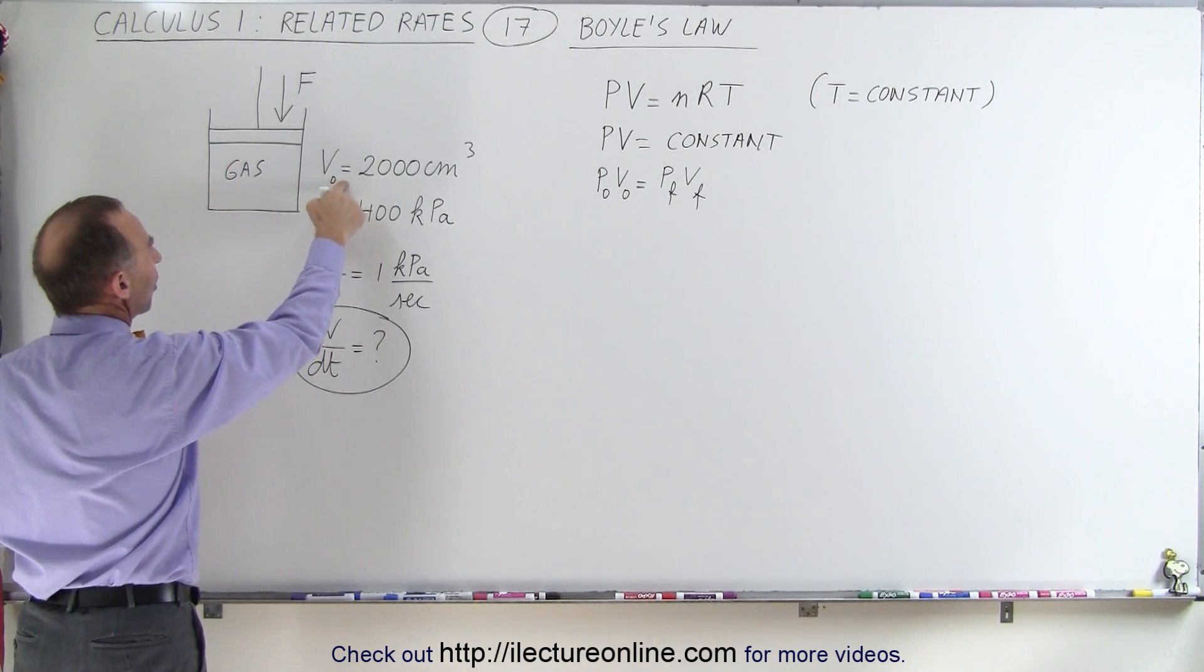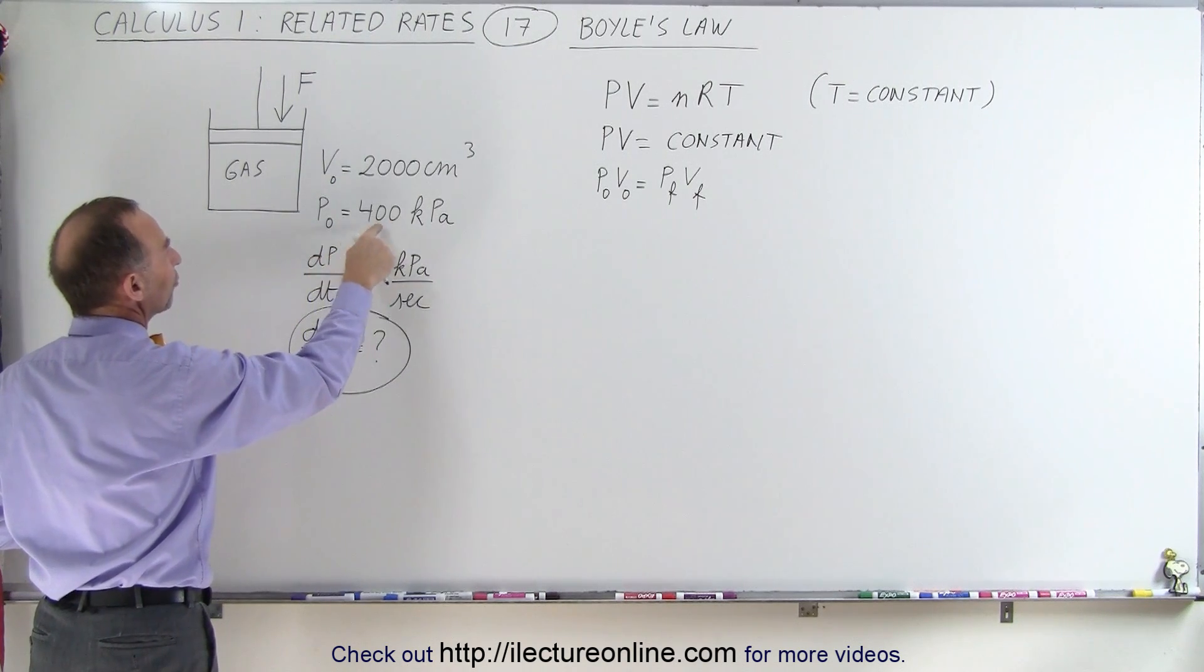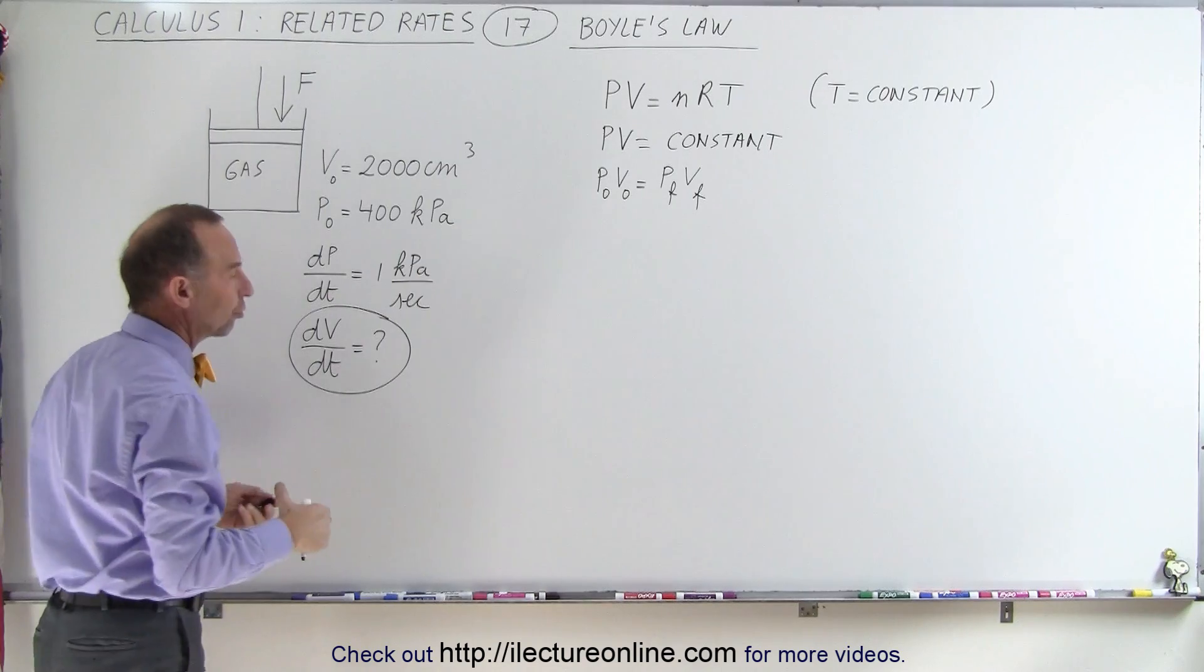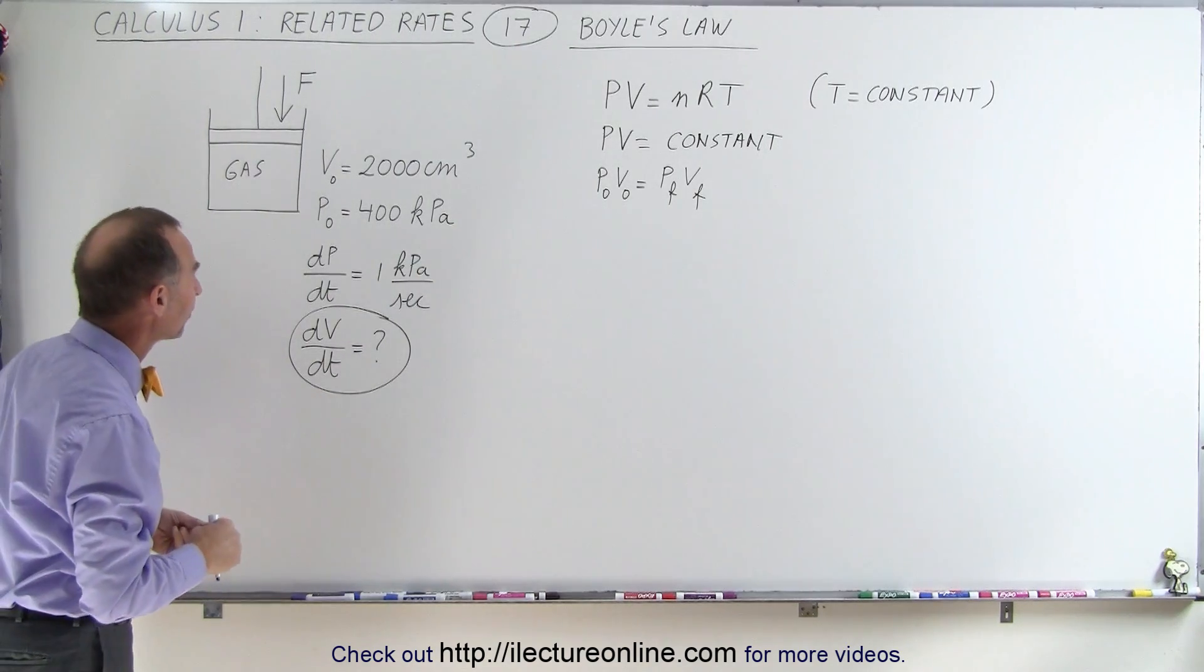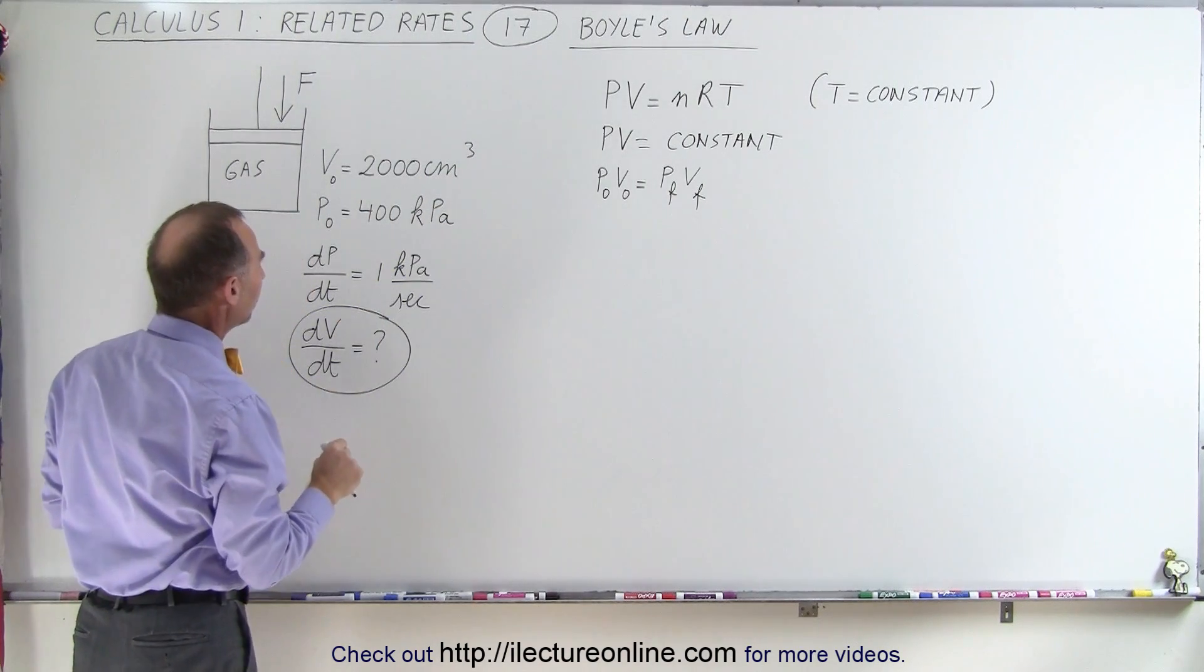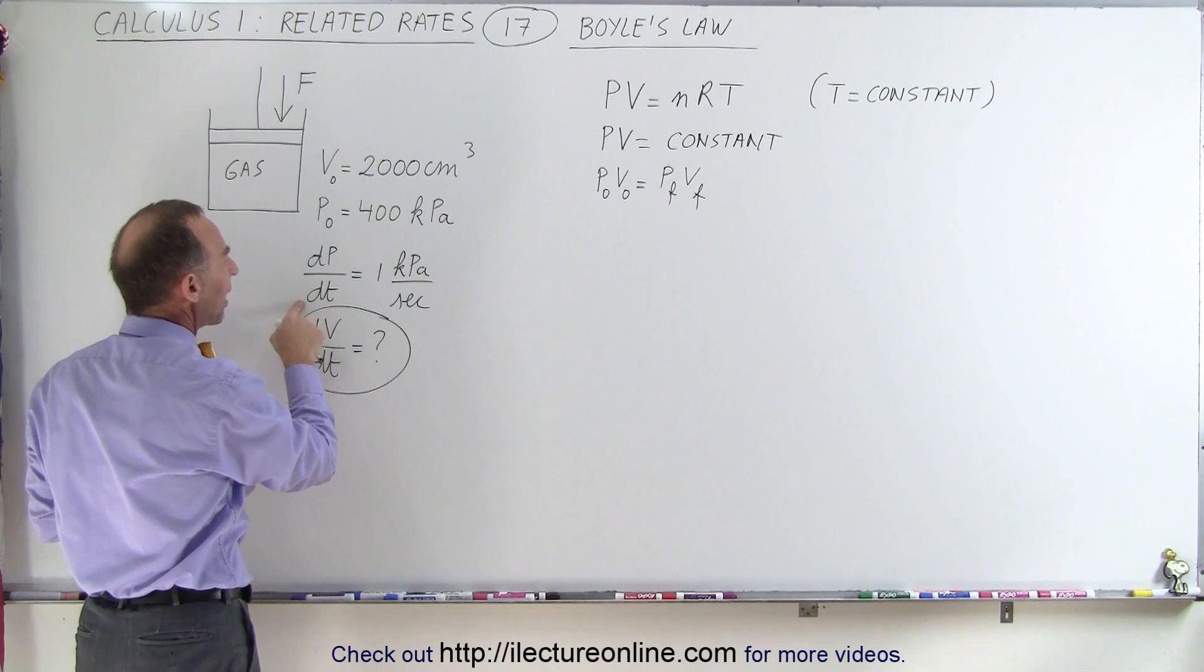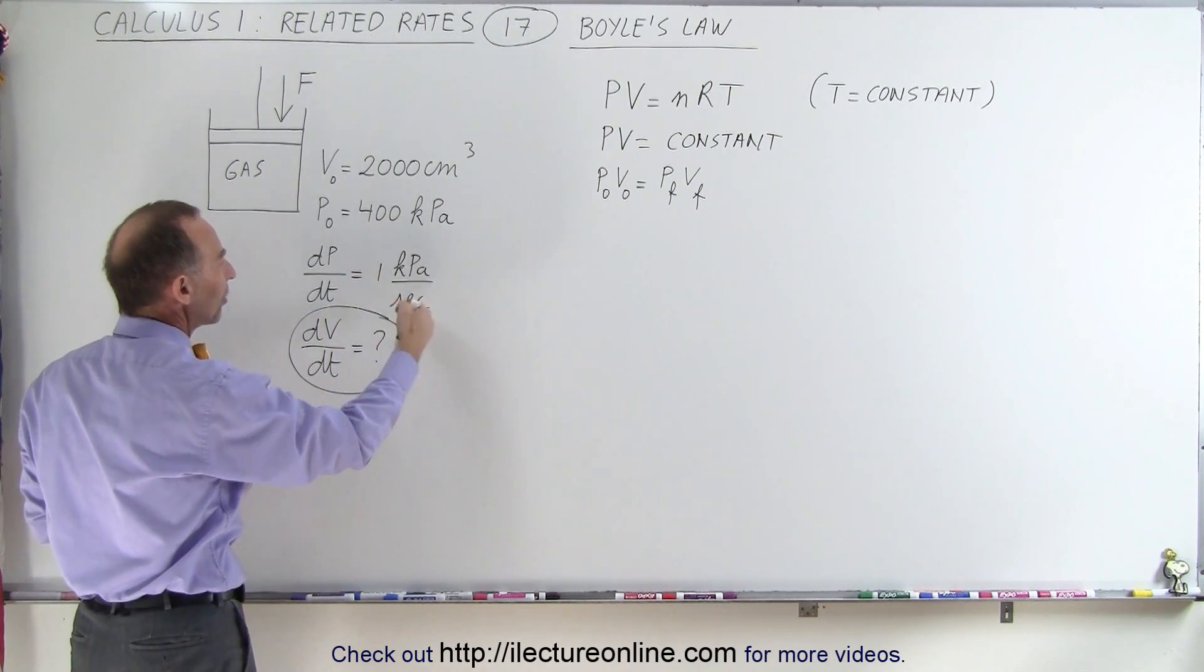The gas has a volume initially at 2,000 cubic centimeters and a pressure initially at 400 kilopascals, that's 400,000 pascals. We're pushing down on the gas in such a way that the temperature remains constant, and the rate of change of the pressure as a function of time is 1 kilopascal per second.